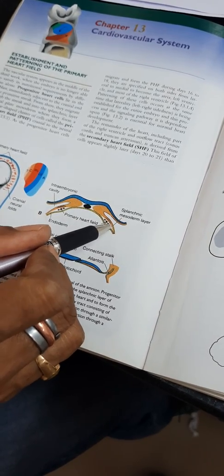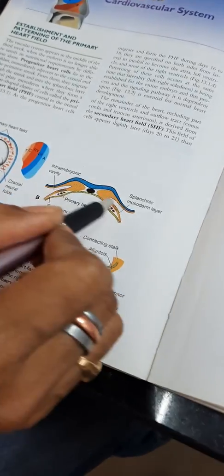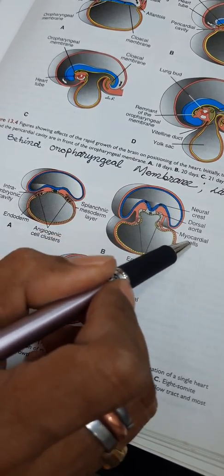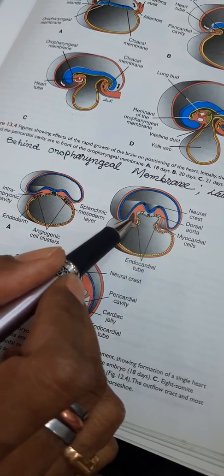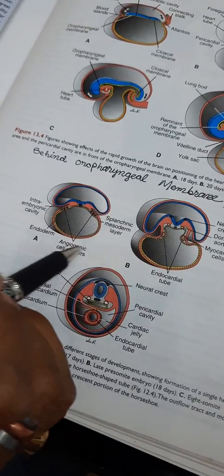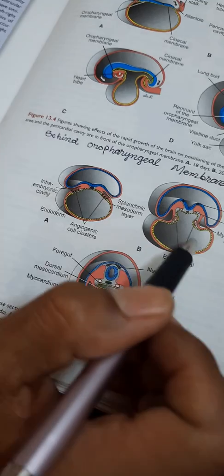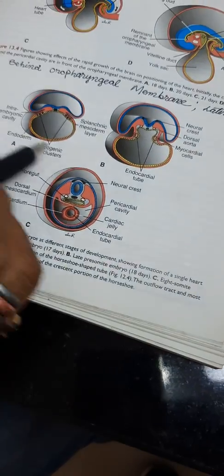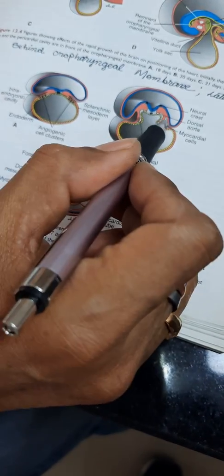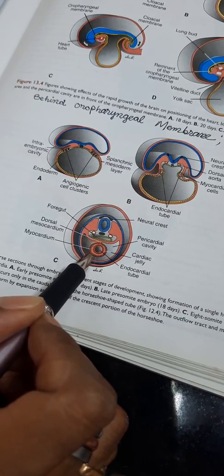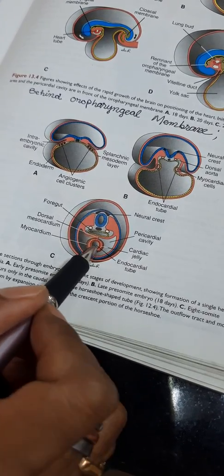Here you see three tubes on both sides. This primary heart field, also known as an angiogenic cell cluster, will develop into the dorsal aorta medially and endocardial tubes laterally. So finally, at the end of lateral folding, the right and left endocardial tubes will fuse together to form a single endocardial tube.